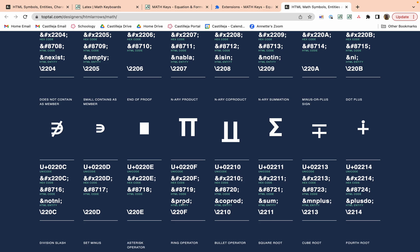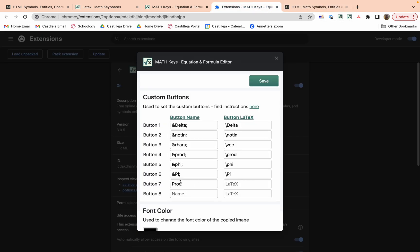It's ampersand prod semicolon, so usually they're all self-explanatory. It's usually an ampersand and then whatever the LaTeX code is, usually prod, then you add a semicolon, and then you write slash prod here.